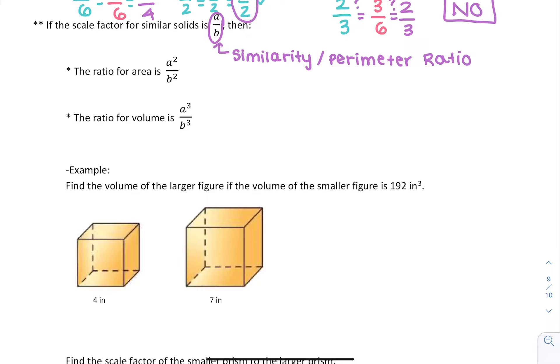If we know that's A over B, then the ratio for the areas is A squared over B squared, and the ratio of the volumes is A cubed over B cubed. We can use this to figure out volumes if we know that two solids are similar.